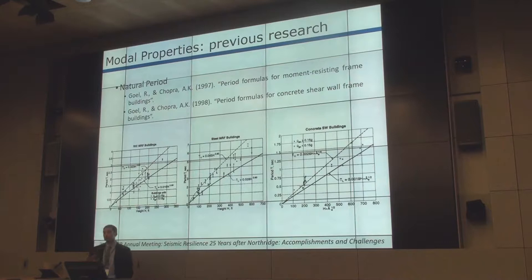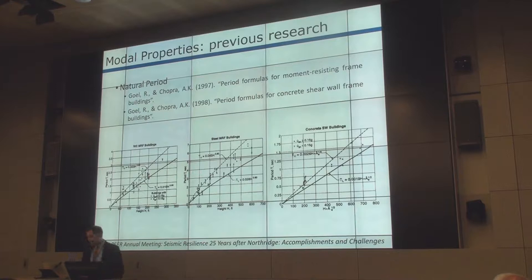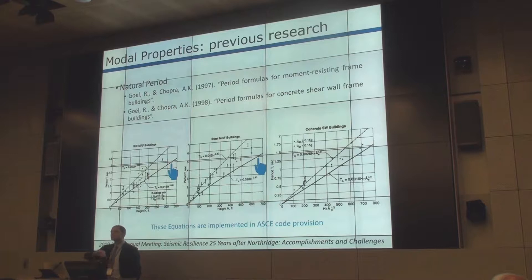Let's talk about what folks in the past have done, mostly regarding modal damping and period. Estimating period goes back to the work that Goel and Chopra did in 1997 and 1998. These two plots show where their suggested equation — the one that ended up in the code for estimating building period — comes from. It's all based on low-amplitude seismic events and low-rise and mid-rise buildings.